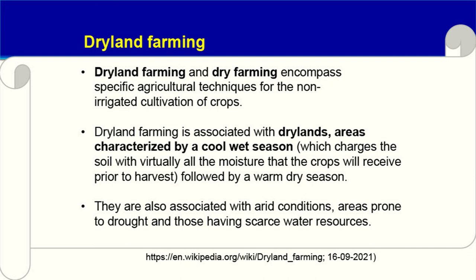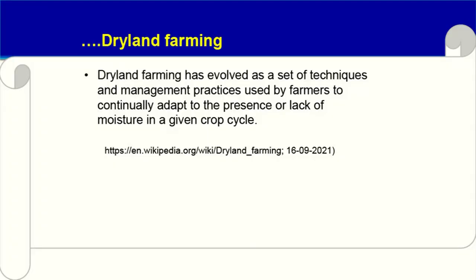Dry land farming and dry farming encompass specific agricultural techniques for the non-irrigated cultivation of crops. Dry land farming is associated with areas having a cool wet season which charges the soil with virtually all the moisture crops will receive prior to harvest, followed by a warm dry season. These areas are also associated with arid conditions having scarce water resources. Dry land farming has evolved as a set of techniques and management practices used by farmers to continually adapt to the presence or lack of moisture in a given crop cycle.